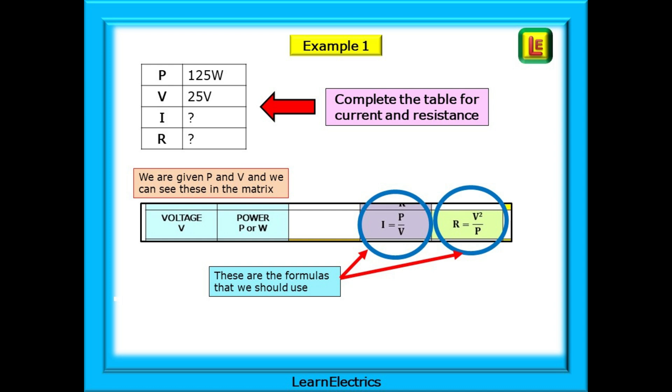Example one gives us the power in a circuit and the voltage in the circuit. It asks us to complete the table by finding the current flowing and the resistance. We are given P and V in the question. All that we need to do is to look down the leftmost two columns and find voltage and power. Look along the row, and there are the two formulas that we need. Pause the video now and attempt the question before looking at the answers on the next slide.